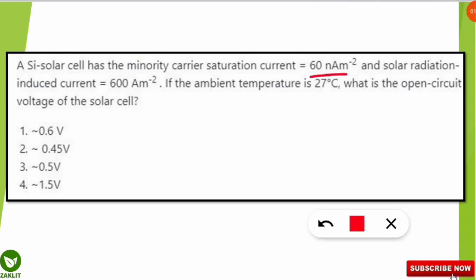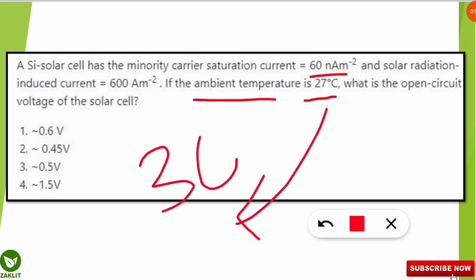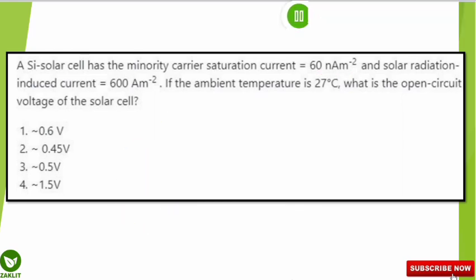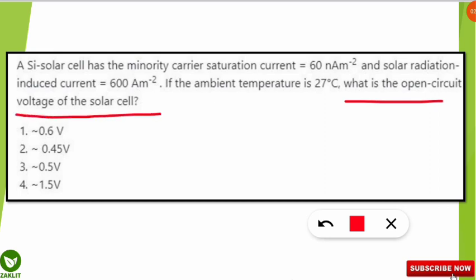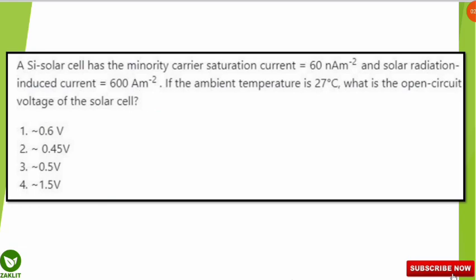The ambient temperature is given as 27 degrees Celsius, which is common in this type of numerical. We convert it to Kelvin by adding 273, giving us 300 Kelvin. The question asks: what is the open circuit voltage for the solar cell? We will now solve this using several constant values and a very important formula.